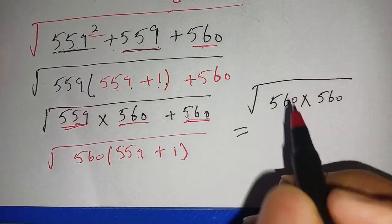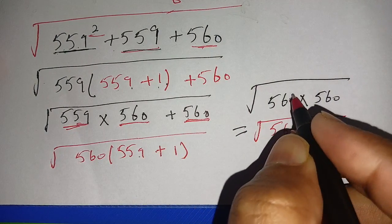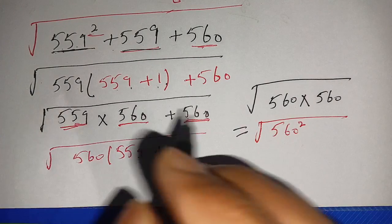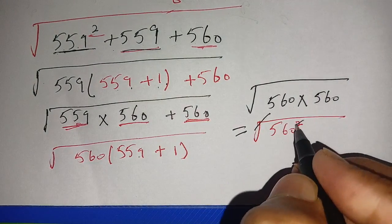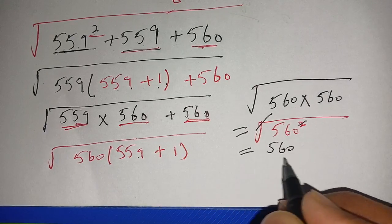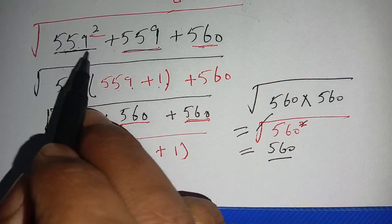On the next step, we write this as square root of 560 to the power 1 plus 1, it becomes 2. We can cancel out this square by square root. The remaining term is 560.